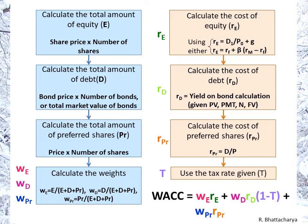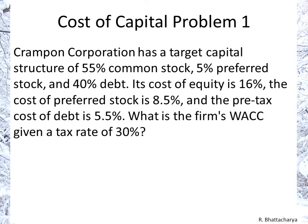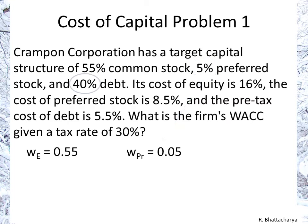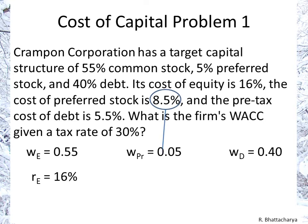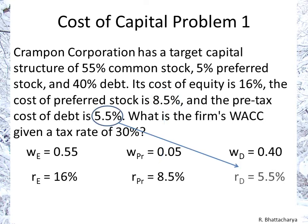We have all these numbers already for this question, so let's go back to the question. We just need to label appropriately: 55% is the weight of equity, 5% is the weight of preferred shares, and 40% is the weight of debt. On the cost front, 16% is the return to equity, 8.5% is the return on preferred shares, and 5.5% is the return to debt.